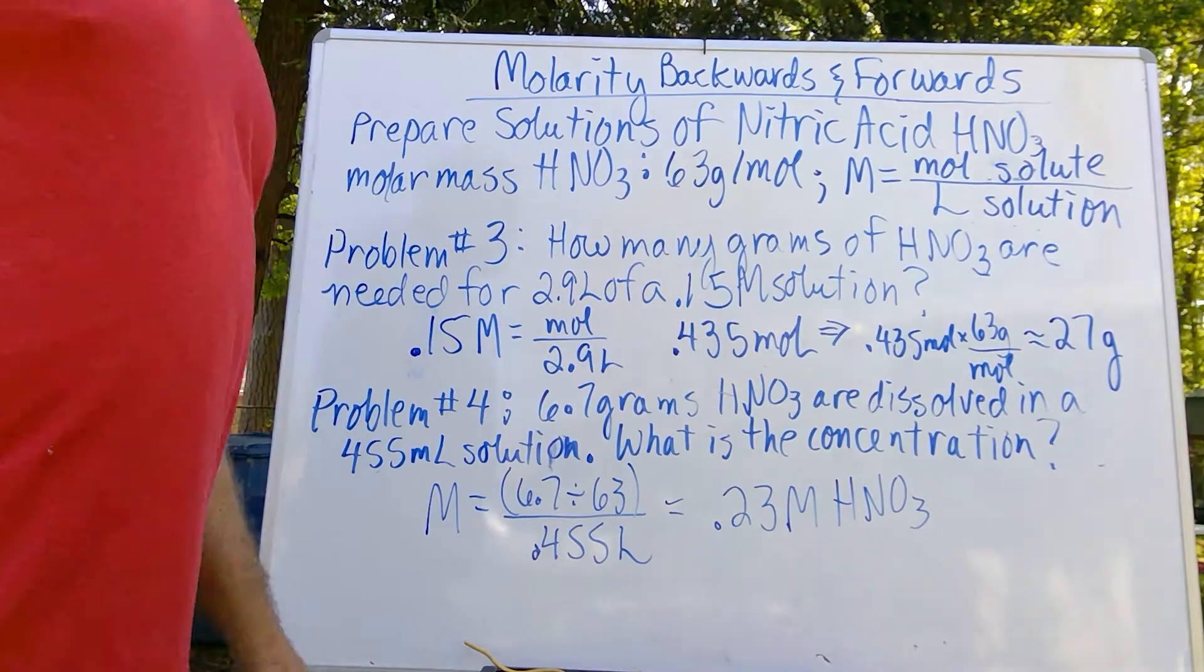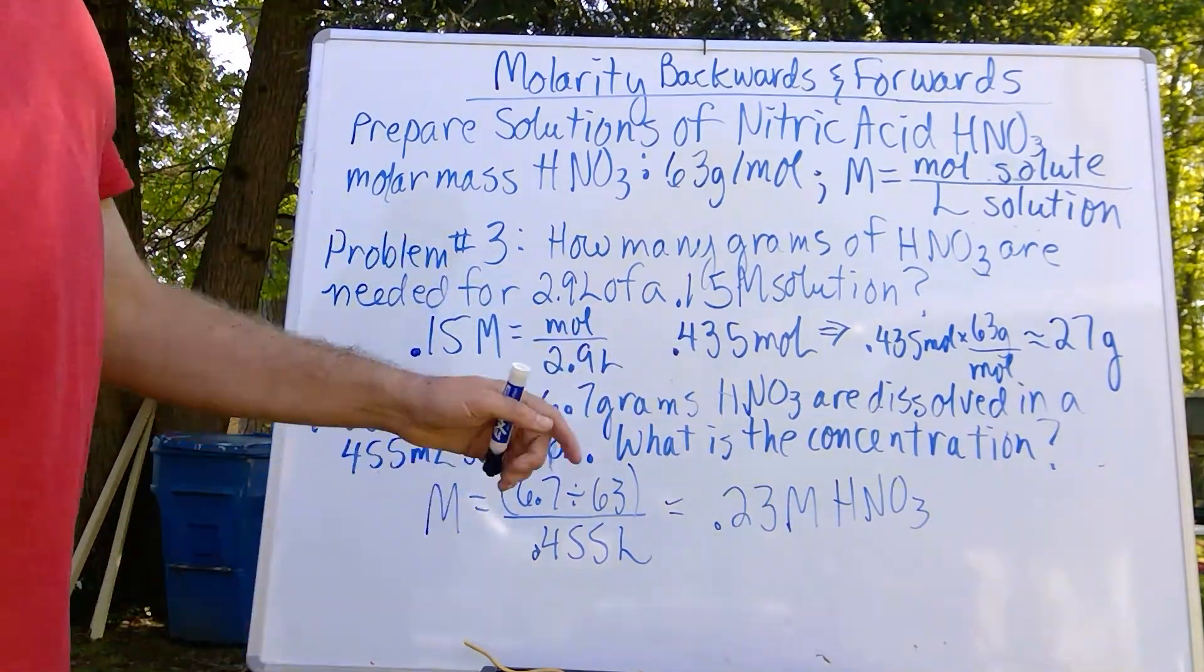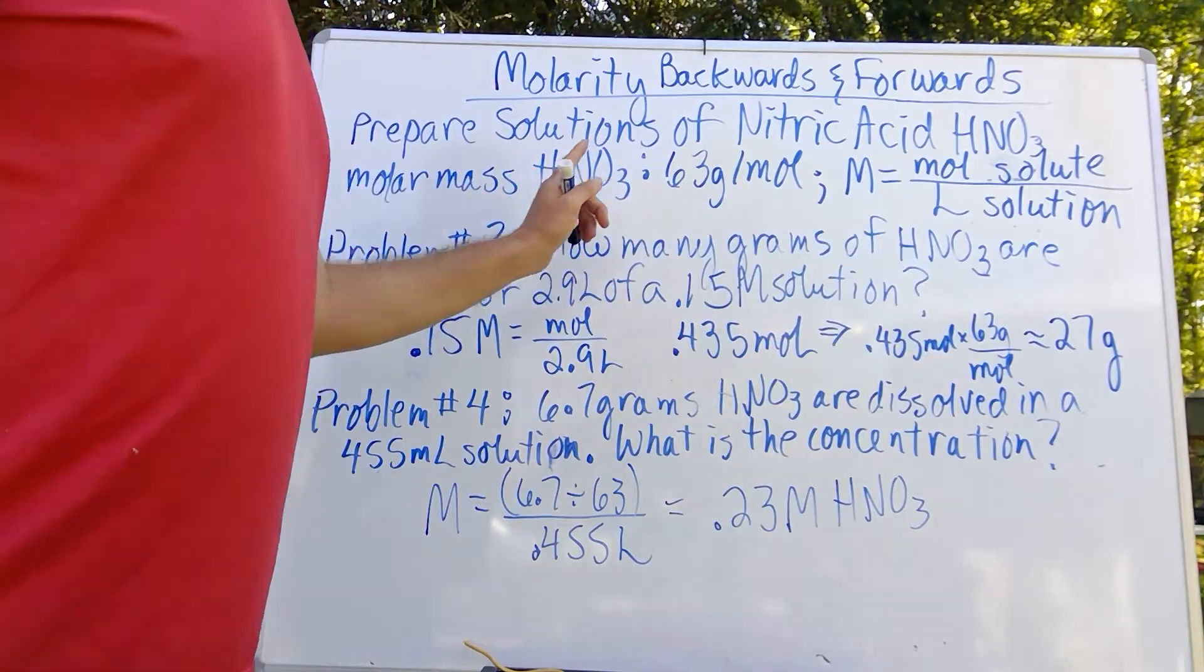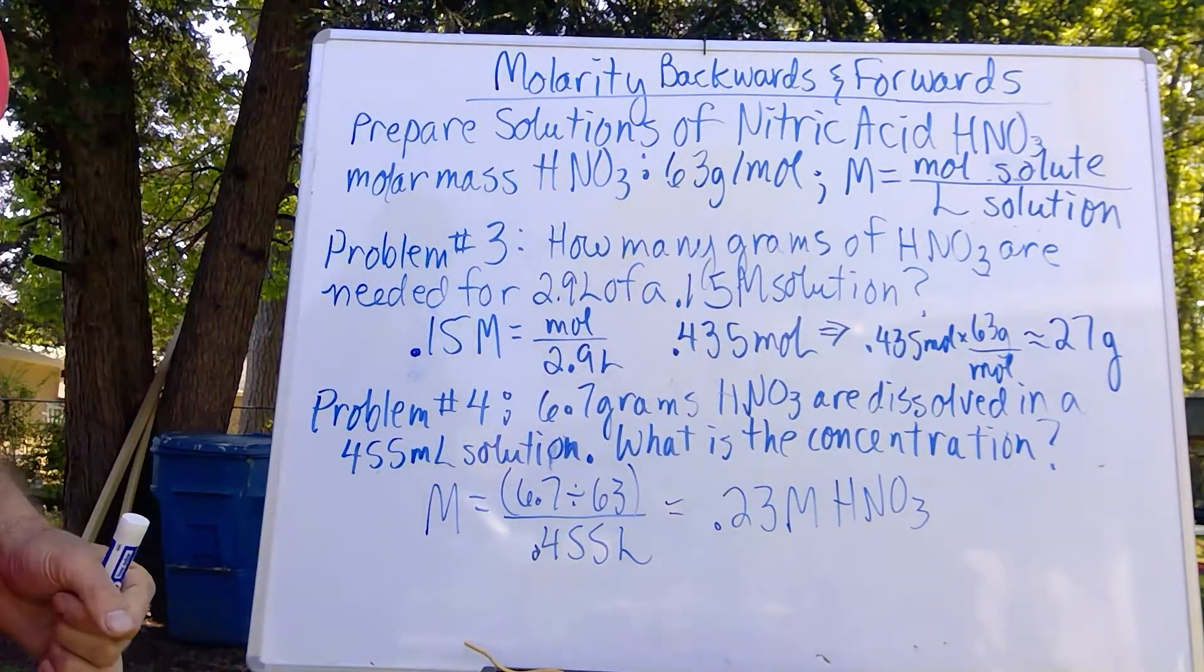This is a moles to liters ratio, so we simply solve for moles, and then we get out our trusty molar mass of nitric acid, and there we go. We get 27 grams needed.